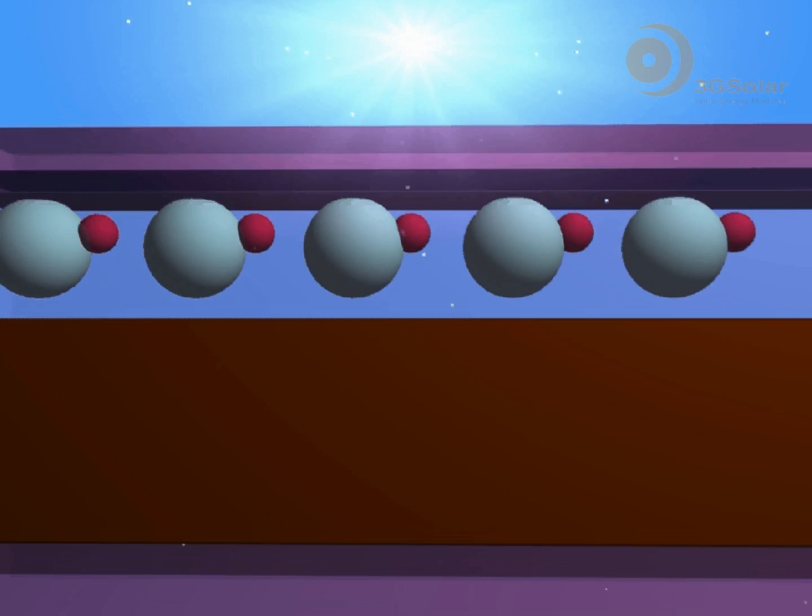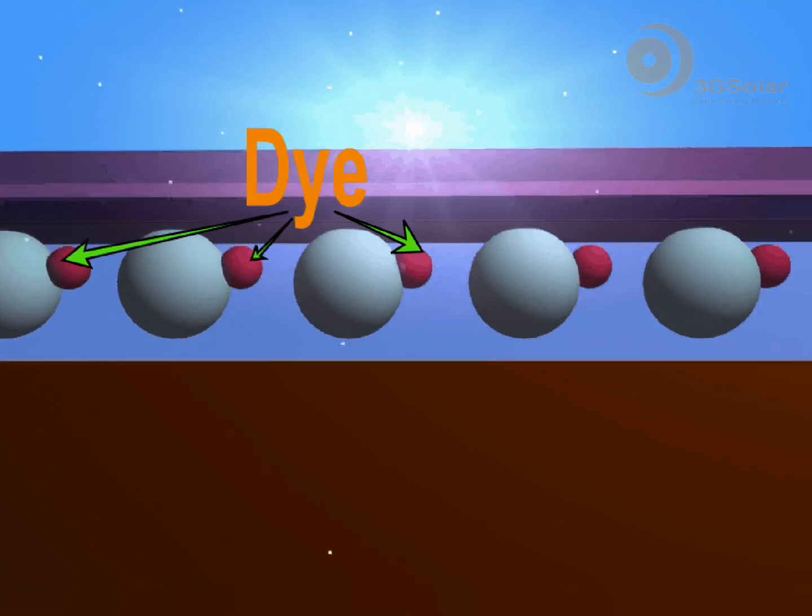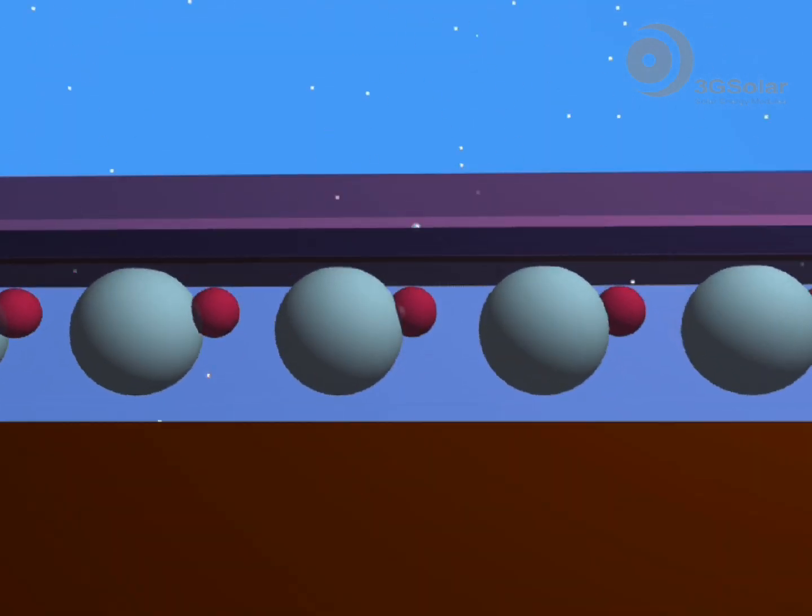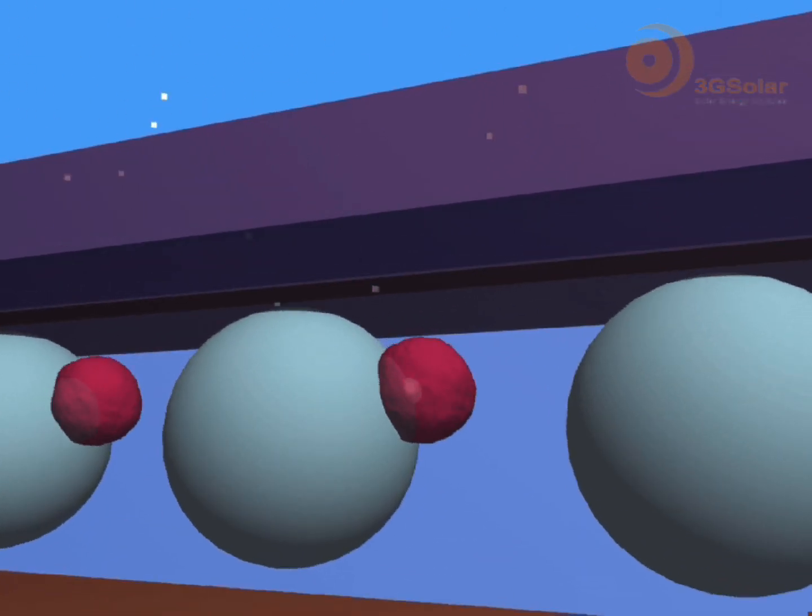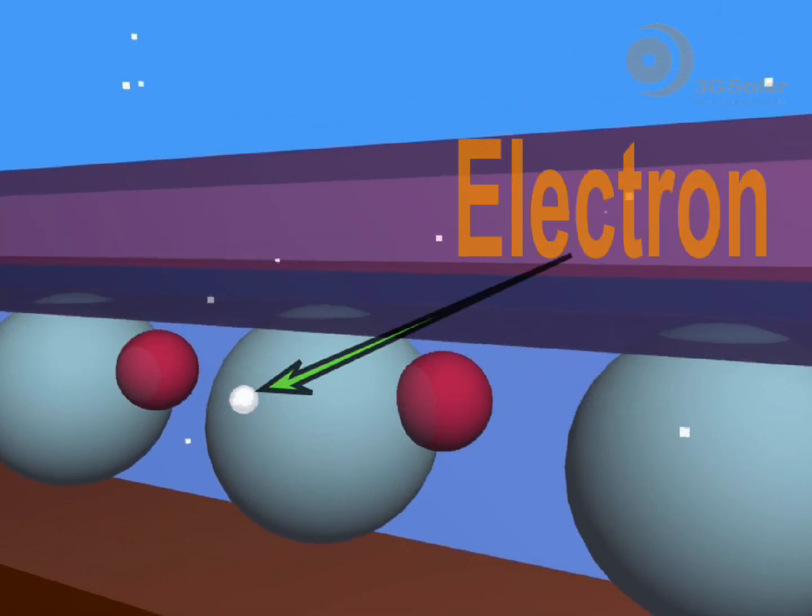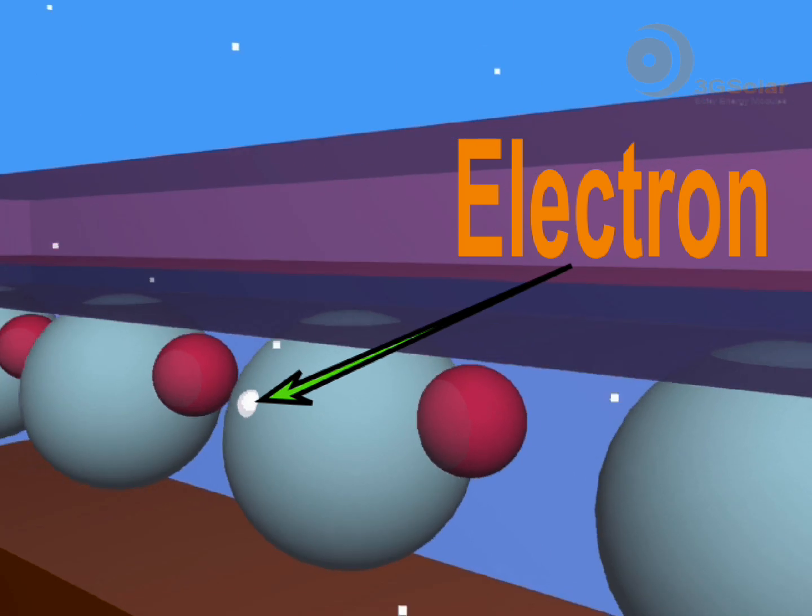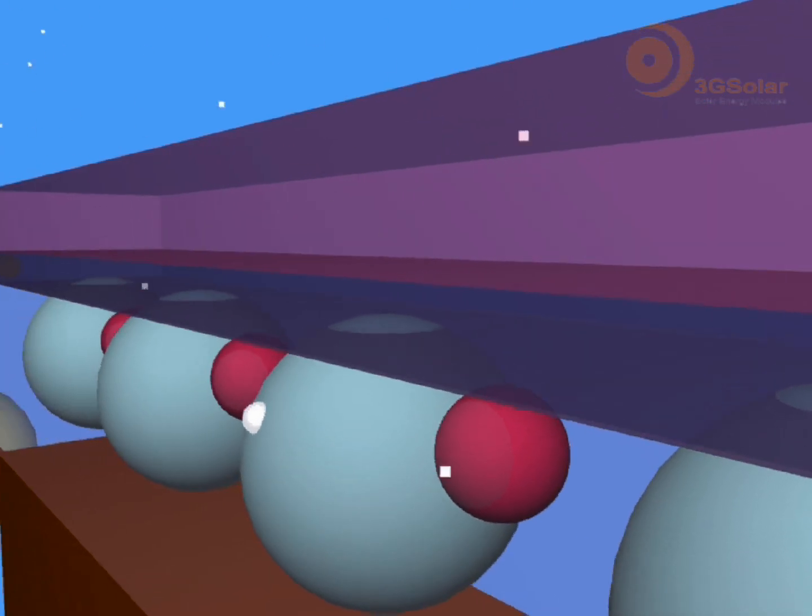A photon strikes a dye molecule absorbed on the surface of the TiO2 causing an excited state which releases an electron into the TiO2 that exits through the conductive layer.